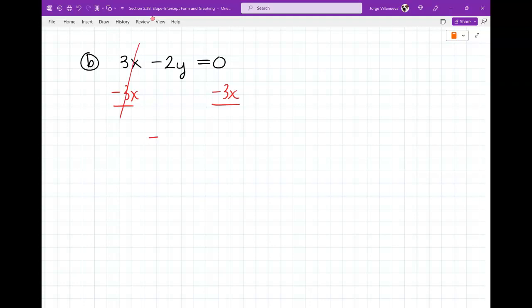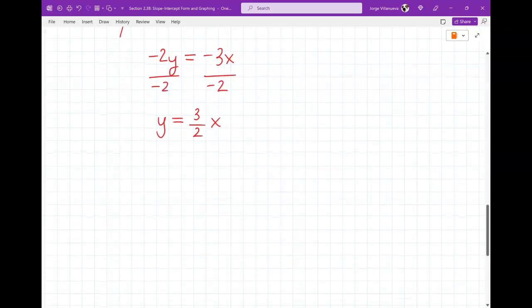So this will cancel. You get negative 2y equals negative 3x. A student asked me earlier, do I put the plus 0 there? No, you don't have to. I'm showing it to you just so you can see it, but I'm about to erase it. So my next step is to get rid of that negative 2. So let's divide both sides by negative 2. So I get y equal to 3 over 2x. It's positive because it's a negative divided by a negative. So it's a positive answer. I'm done.